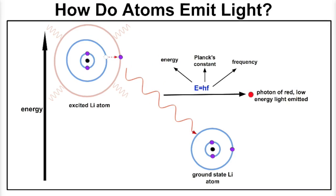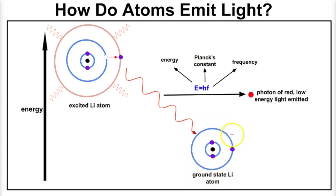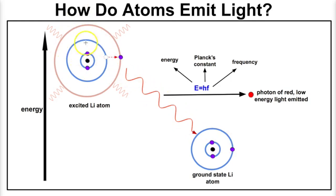Let's suppose we have a lithium atom. This lithium atom consists of three electrons and has one valence electron. Right now it is in the ground state — meaning all of the electrons are occupying their lowest possible energy levels. All atoms want to be in a ground state. But if we pass electricity through this lithium atom or heat it up, it's going to enter an excited state.